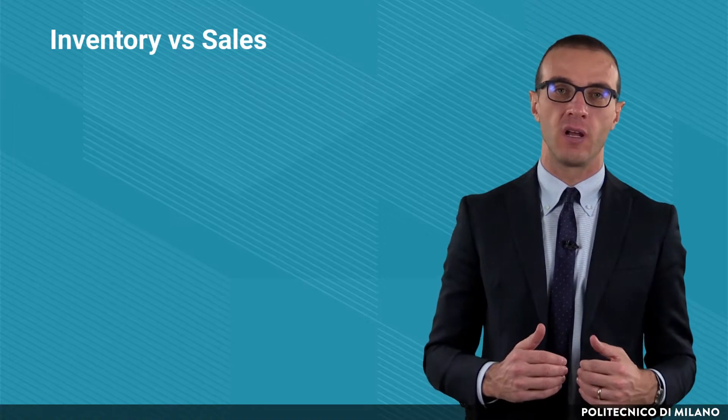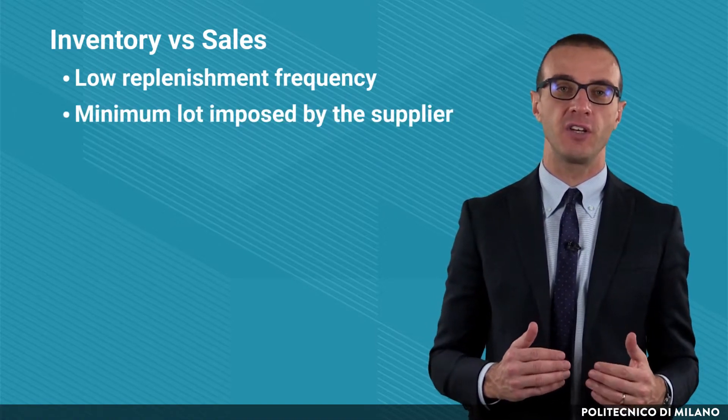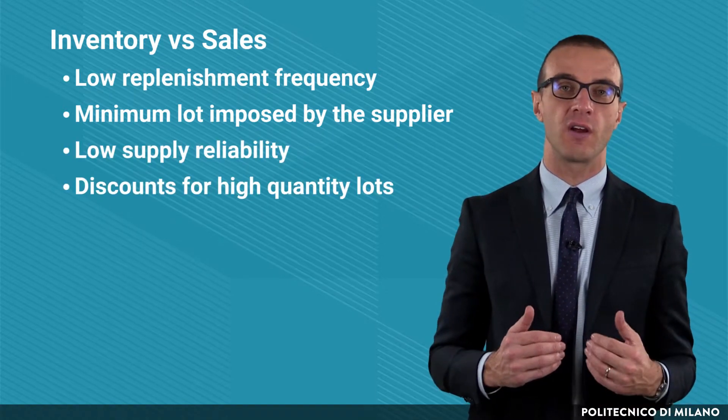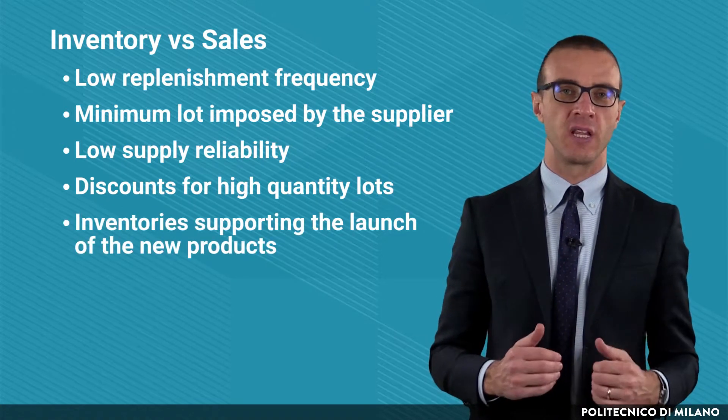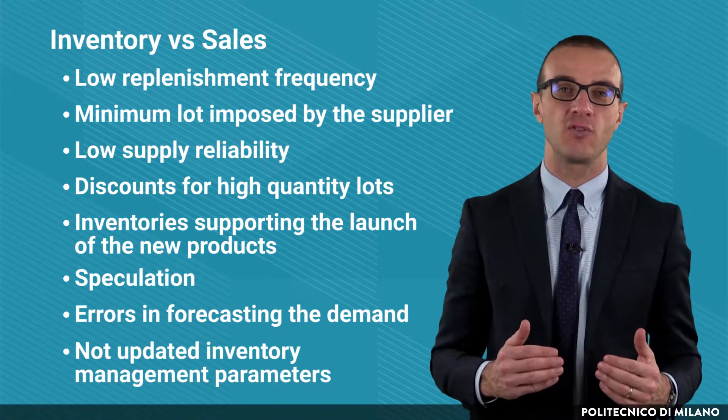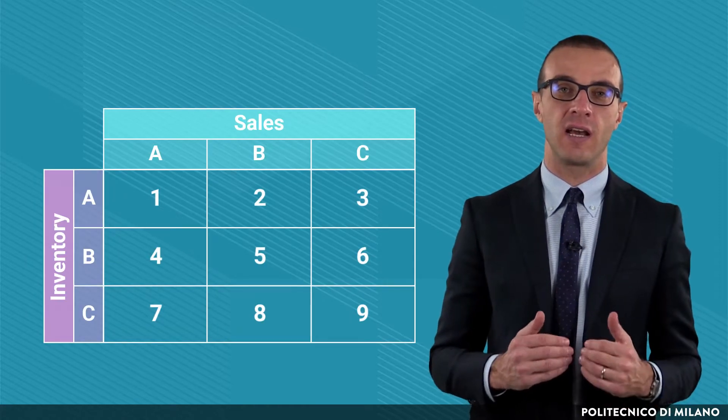There may be different reasons behind the misalignment between inventories and sales, such as low replenishment frequency, minimum lot imposed by the supplier, low supply reliability, discounts for high quantity lots, inventories supporting the launch of new products, speculation, errors in forecasting the demand, and not updated inventory management parameters.